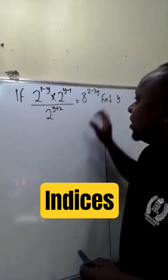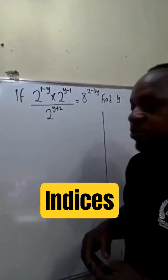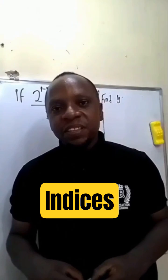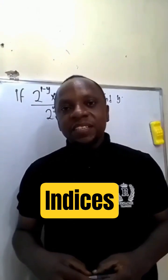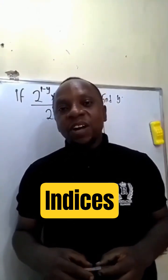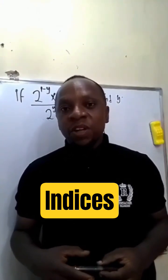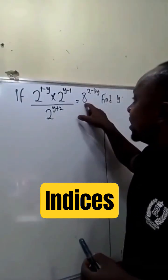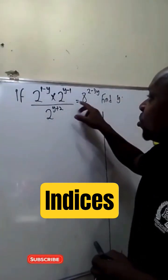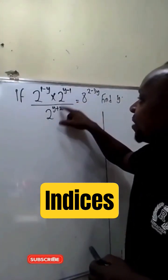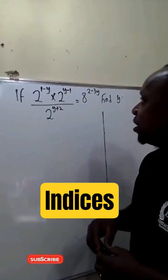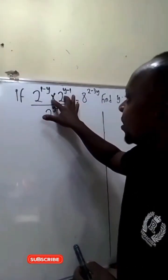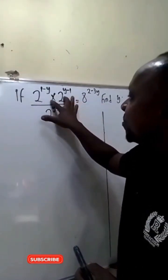To find the value of y in this equation, we are going to be applying three laws of indices: the product law, the quotient law, and the power law. We'll also be expressing it in base 2, because most of our bases are in base 2. The first thing we'll be doing is to simplify this.